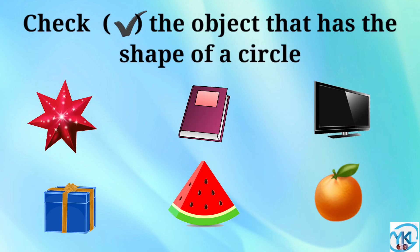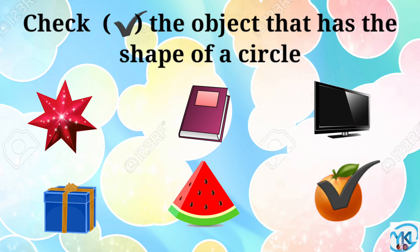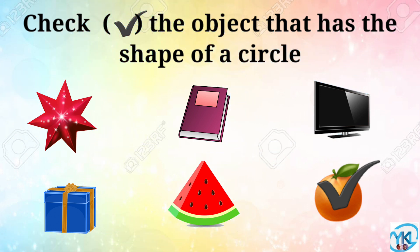Check the object that has the shape of a circle. The orange has the shape of a circle. Excellent. Yes, the orange has the shape of a circle.